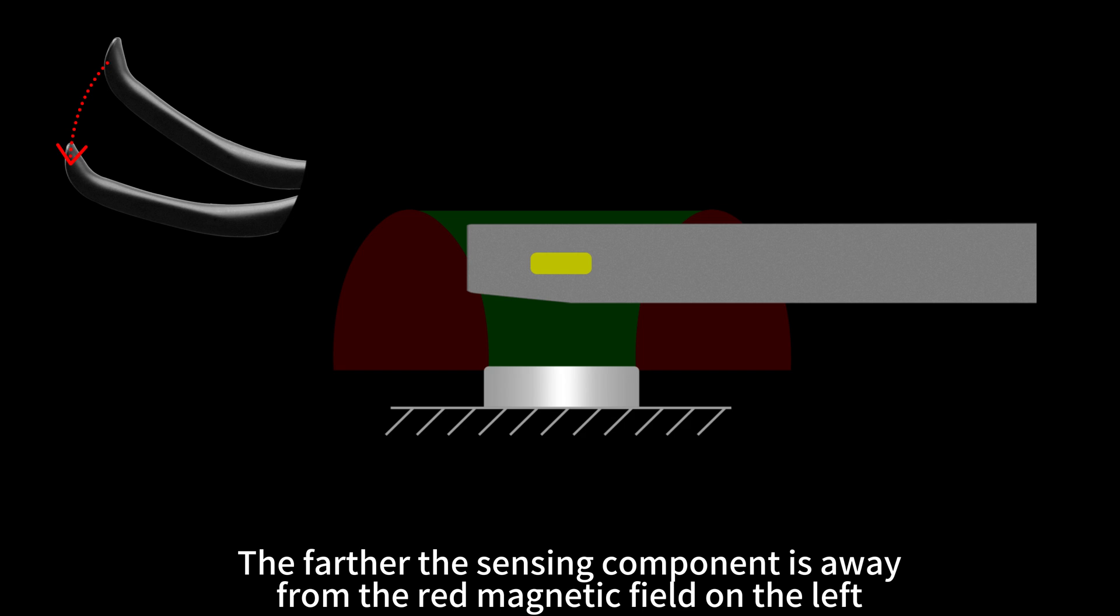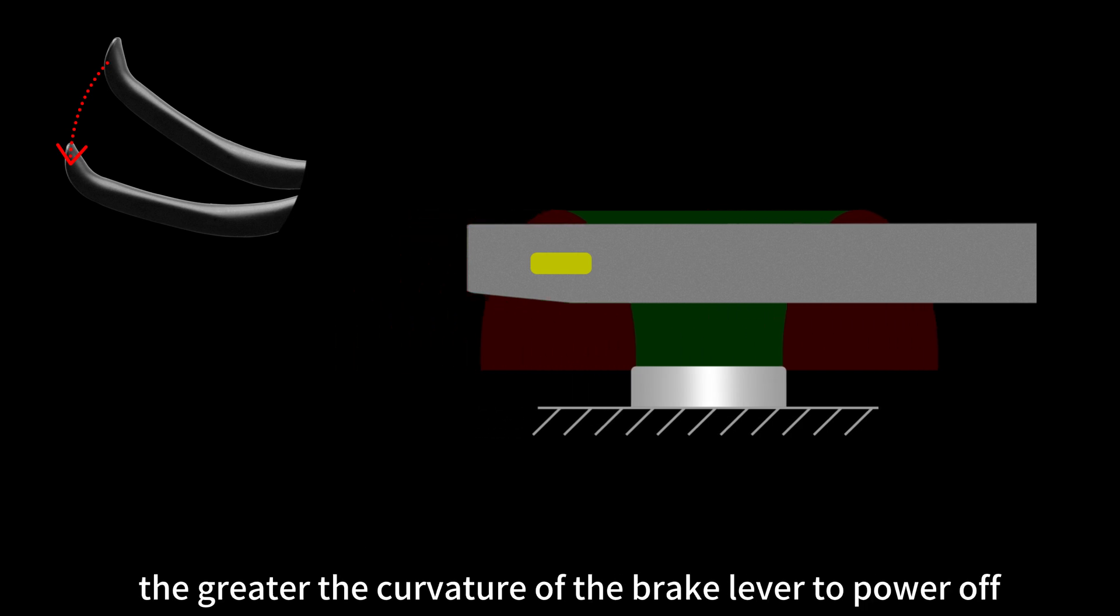The farther the sensing component is away from the red magnetic field on the left, the greater the curvature of the brake lever to power off.